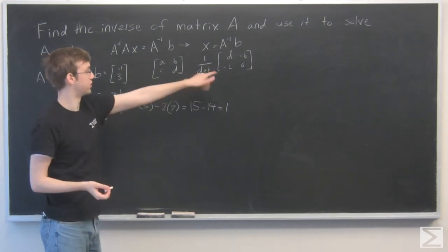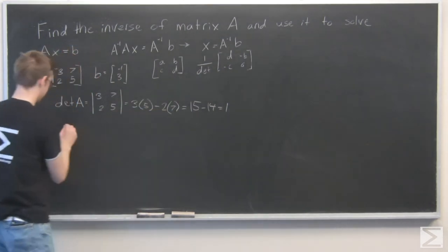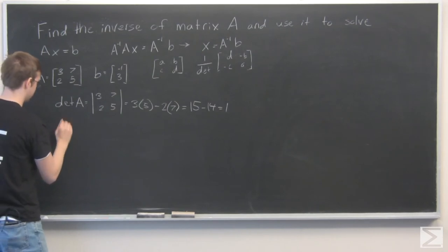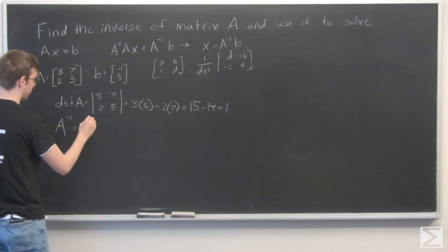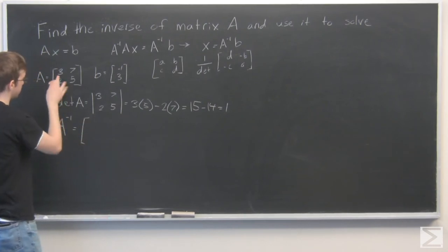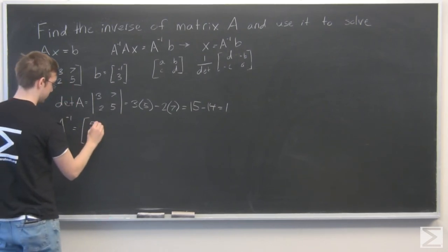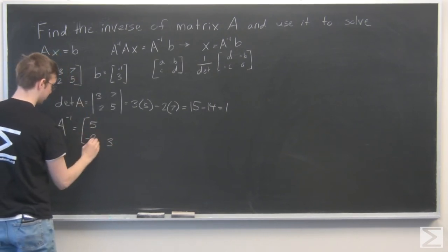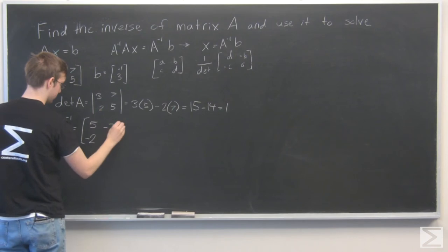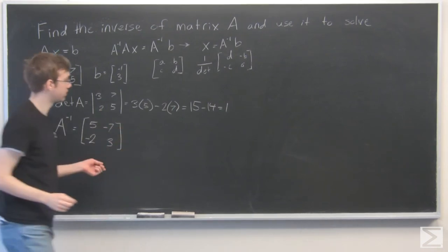Now we just need to perform this switcheroo on A. So A inverse becomes 1 over 1. I don't need to write that. Times switch 3 and 5, and 2 and 7 become negative. All right, so here's our inverse.